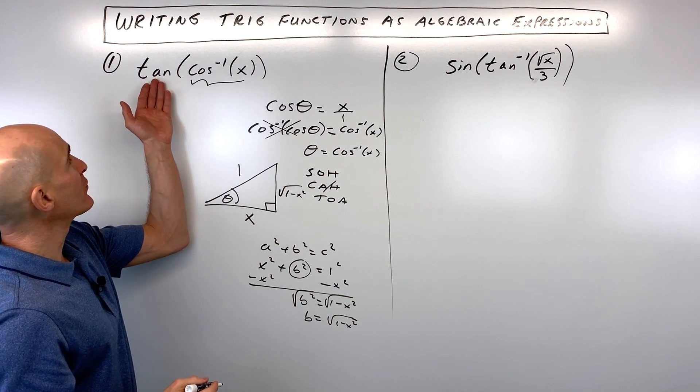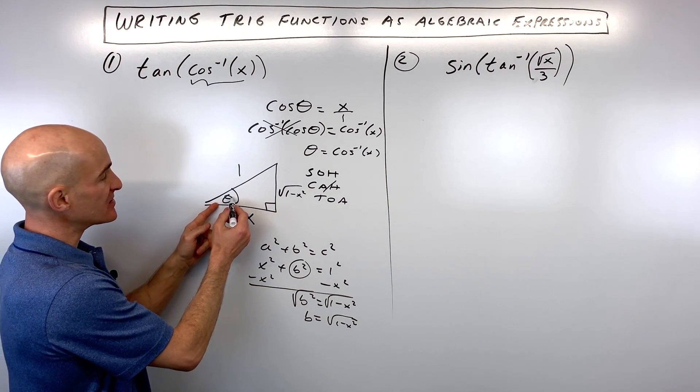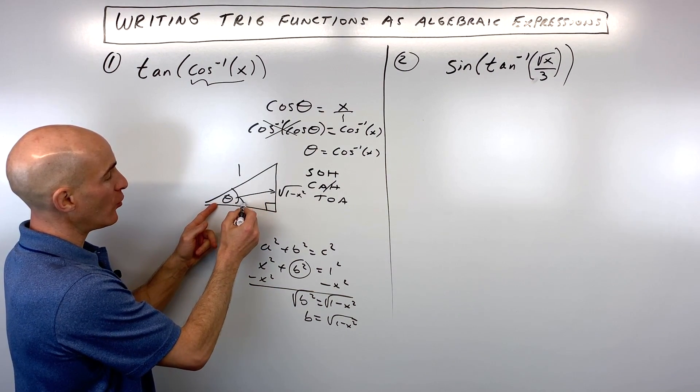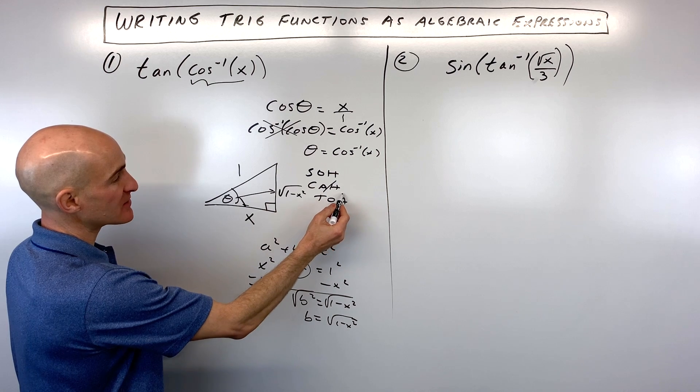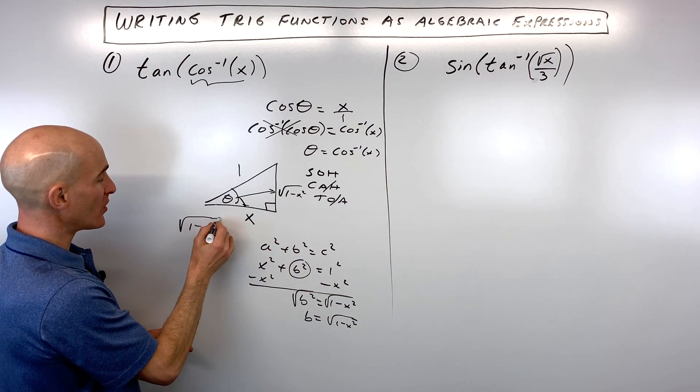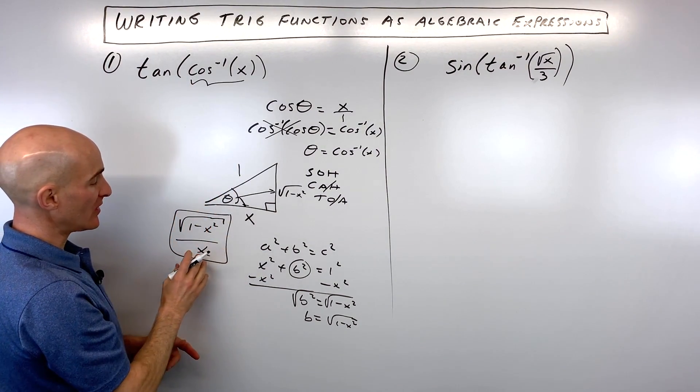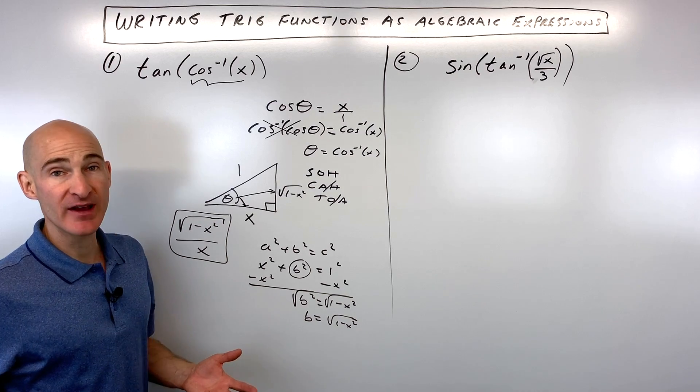So now what we're figuring out is what's the tangent of this angle. So tangent is the opposite side over the adjacent. Tangent is opposite divided by adjacent. So this is going to be square root of one minus x squared divided by x. And you can see we've gone from a trig function here to an algebraic expression, and you've got it.